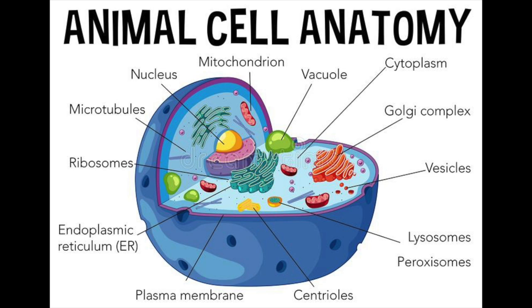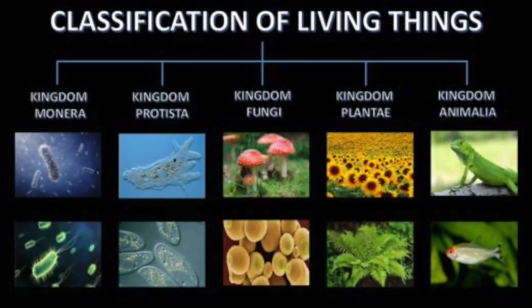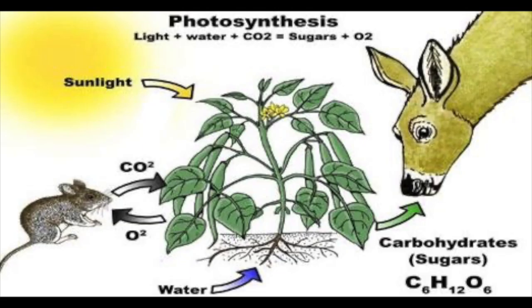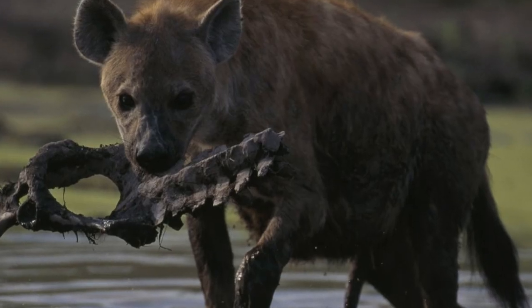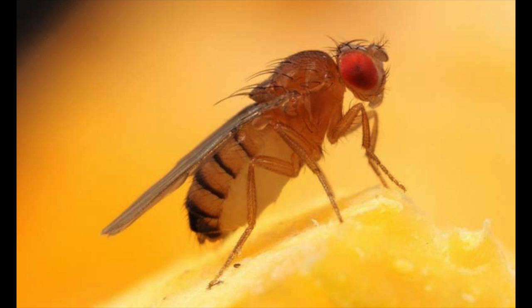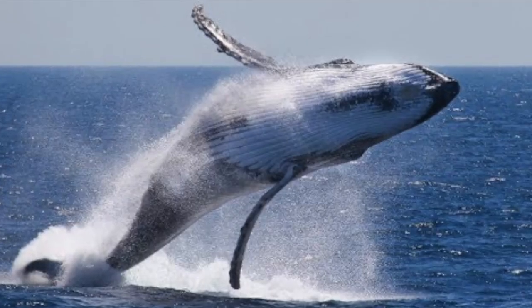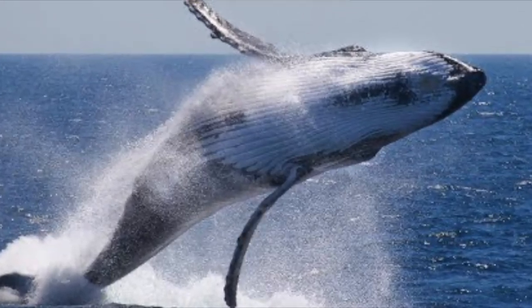Like fungi, animal cells don't have a cell wall or chloroplast. The next kingdom we're going to look at is the Animal kingdom. Animals cannot trap sunlight or produce sugars. Animals get energy by consuming other animals or their remains. Animals range in size from a tiny fruit fly to a whale that measures 30 meters long.